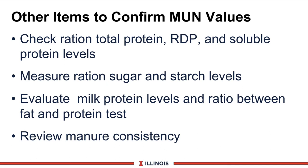Also take a look at milk protein levels — the percent protein. A Holstein cow should be around 3 to 3.1 percent protein. If your MUN is really low and milk protein is low, you're starving the bacteria — and vice versa. Look at the ratio of milk fat to milk protein, as that is important as well. Finally, look at manure: very loose manure tends to be associated with high protein diets, while really stiff manure implies lower protein levels and lower MUN values.